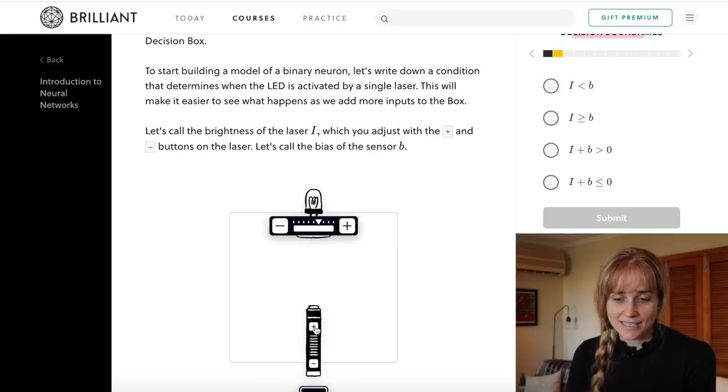So the LED will turn on when the input intensity from the laser is enough to reach the bias setting on the LED. So anything above the setting, the LED will turn on, anything below and it's off. We could move that bias to be a little bit lower and we'd be able to turn it on with less intensity of light.